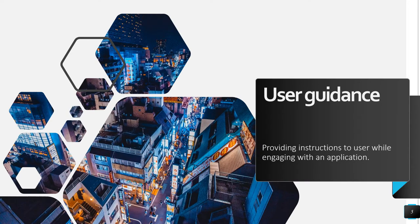Now we're going to look at user guidance. User guidance is basically providing instructions to users while they're engaging with an application. If you're placing an order in an online shopping application and you don't receive instructions, the user lacks guidance and can find it difficult to determine the meaning of a field or what information should be entered. Step instructions, provided at the step level, help users accomplish what is required in a particular assignment.